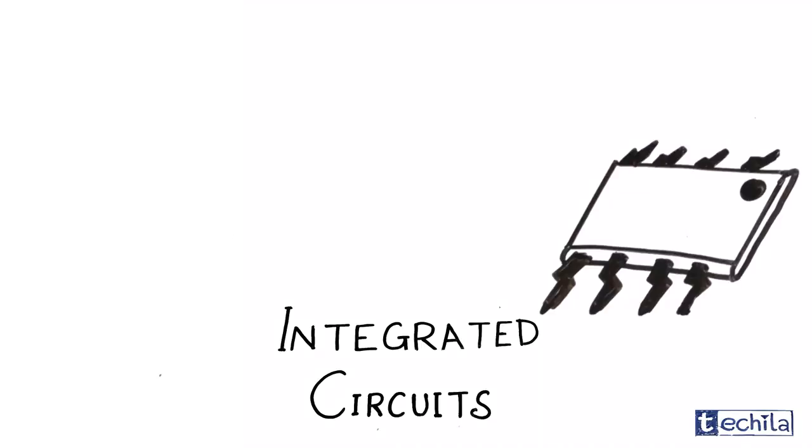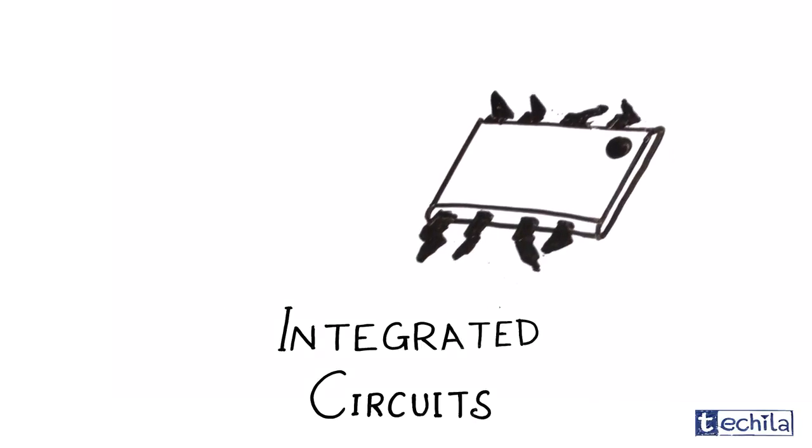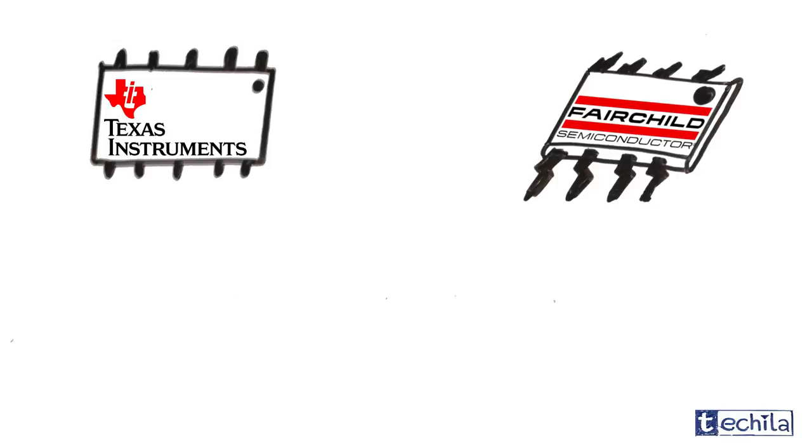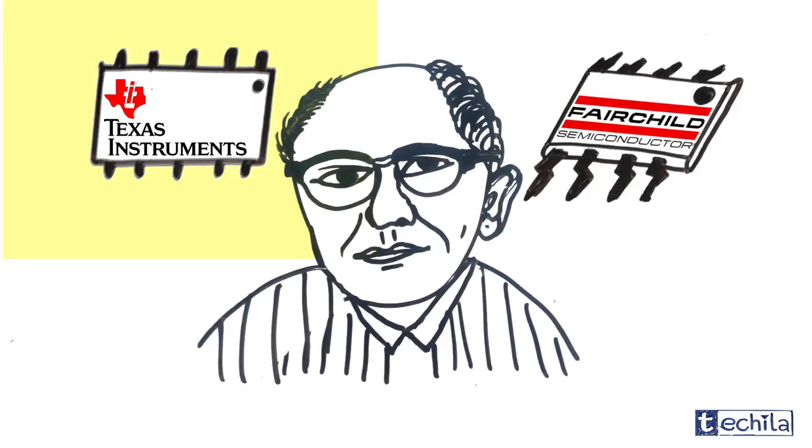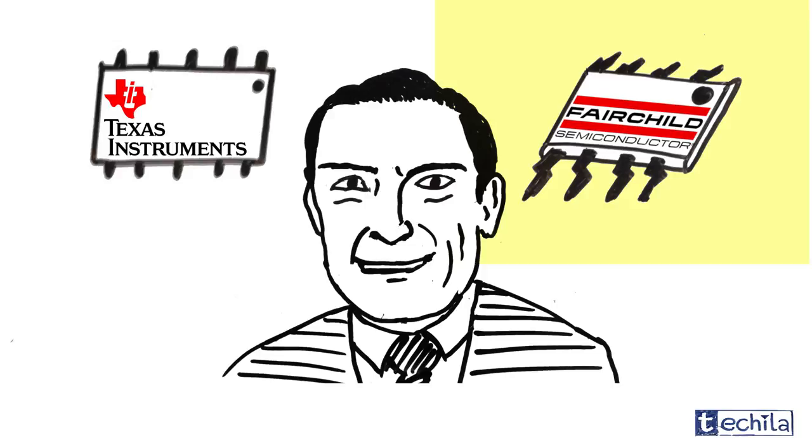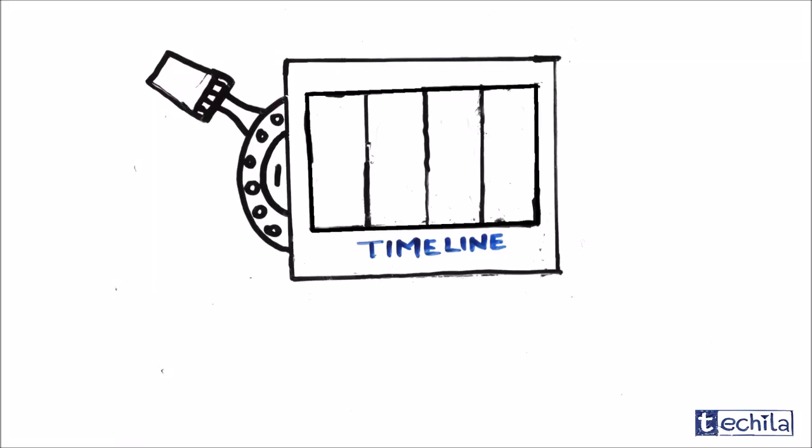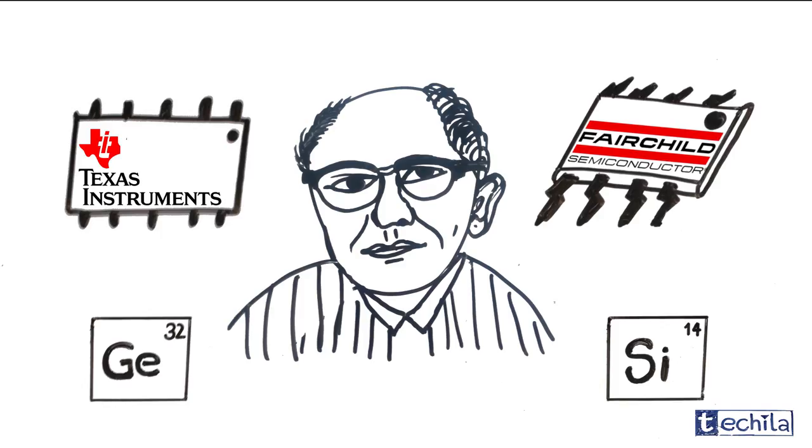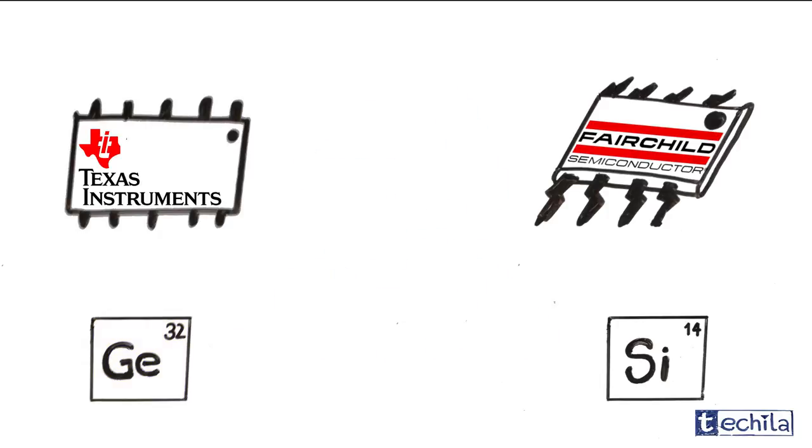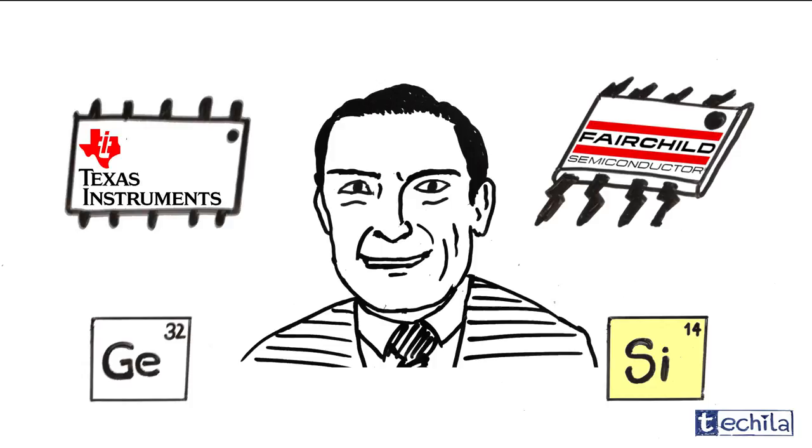The next great advance in computing power came with the advent of integrated circuit. The first practical ICs were invented by Jack Kilby at Texas Instruments and Robert Noyes at Fairchild Semiconductors. In February 1959, Kilby described his new device as a body of germanium semiconductor material wherein all the components of electronic circuit are completely integrated. Noyes also came up with his own idea of silicon IC half a year later.